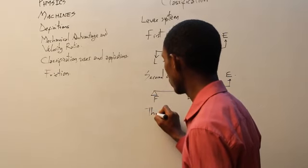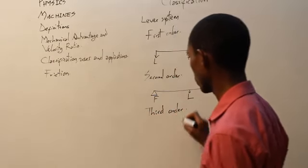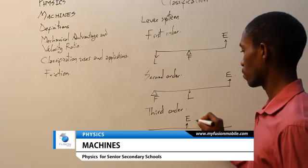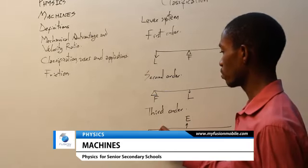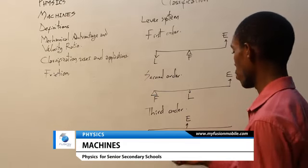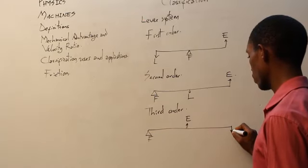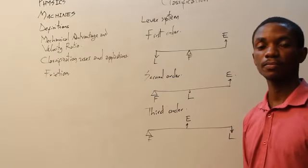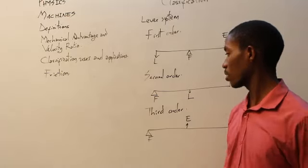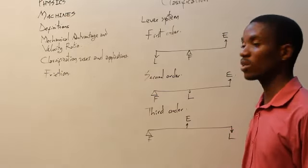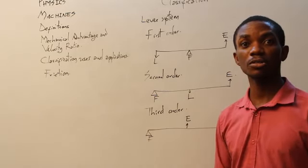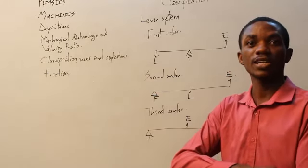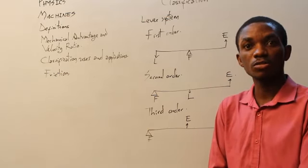In the third order, what we have in the middle is the effort. You could have your fulcrum at the front or at the back, and the load either at the front or at the back. Examples of third order machinery include laboratory tongs or even the human forearm — when you lift something, the muscle in the middle is actually doing the work.